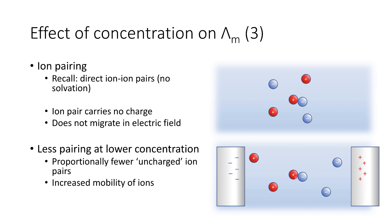So we have all of these different effects happening: the ionic atmosphere becomes more diffuse at low concentrations, increasing mobility; the solvent solvation shells interact less with each other, giving increased mobility at low concentrations; and we get less ion pairing at low concentration, which also increases the mobility. All of these effects serve to increase the mobility and therefore increase the molar conductivity.